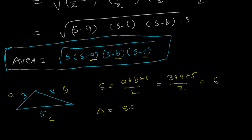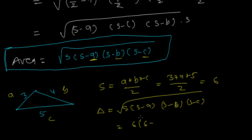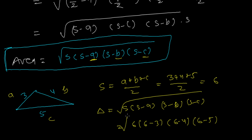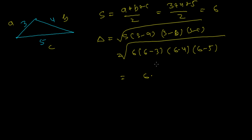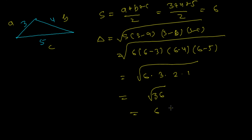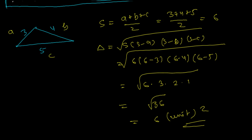Now compute the area: √[s(s−a)(s−b)(s−c)] = √[6 × (6−3) × (6−4) × (6−5)] = √[6 × 3 × 2 × 1] = √36 = 6 square units. This is how we find the area of a triangle without knowing its height — using only the three sides.